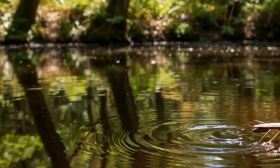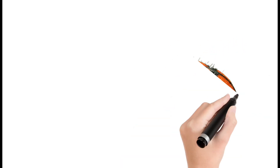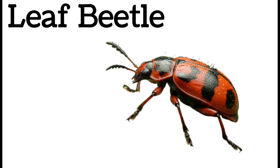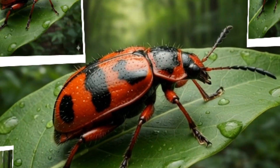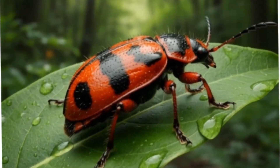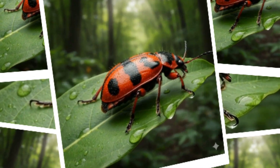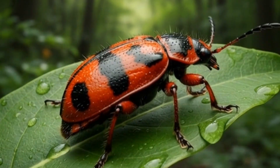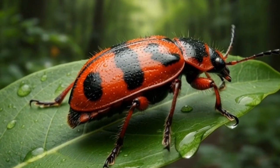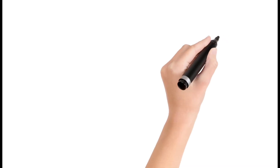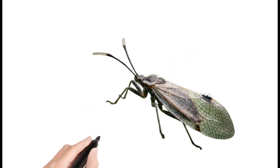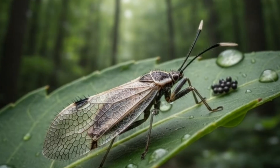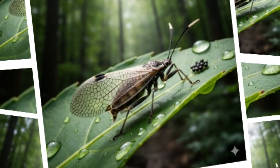Next, leaf beetle: a colorful beetle found on plants. Eats leaves aggressively. Some species are garden pests. Small but shiny in appearance. Found worldwide. Next, caddisfly: a small insect similar to a moth. Larva builds cases from sand or wood.